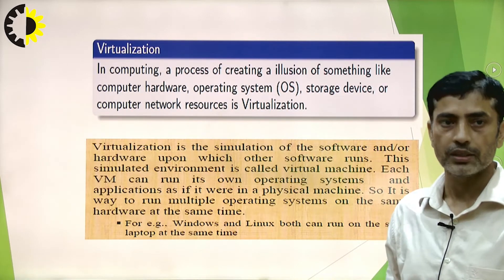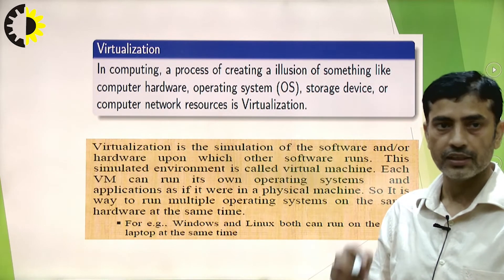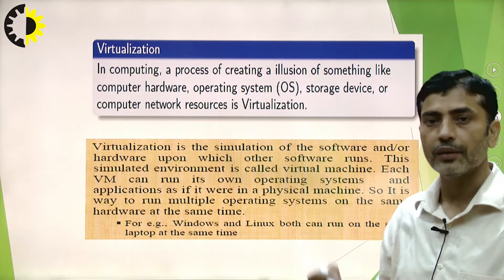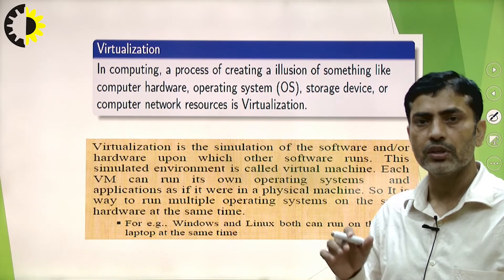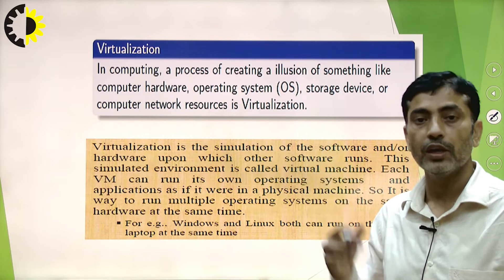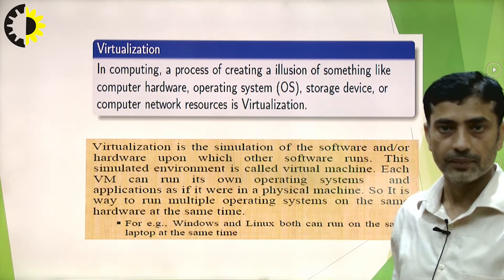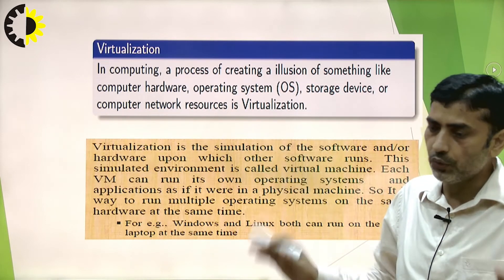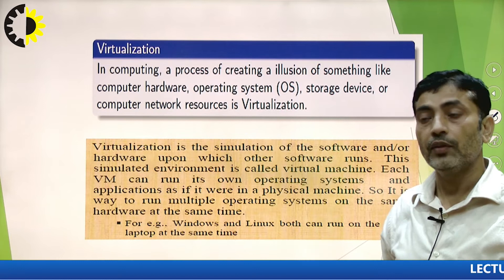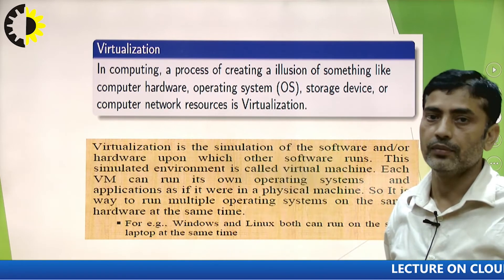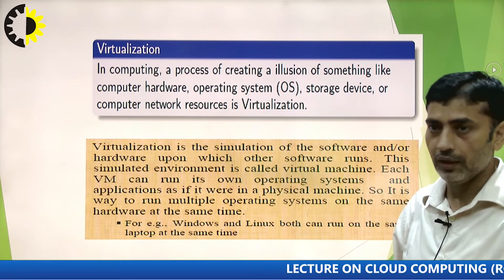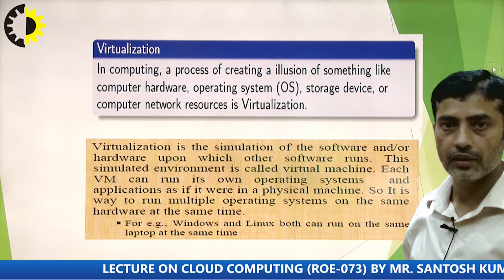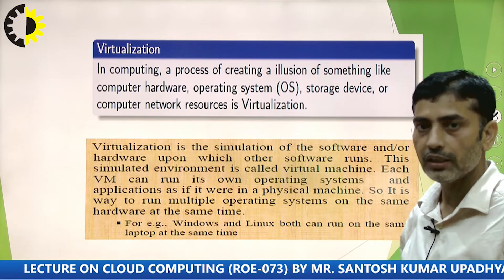Each VM can run its own operating system and applications as if it were a physical machine, so you have an illusion — you cannot differentiate. You have the same environment as when using a physical system. That is the beauty of virtualization: it creates an illusion that each user is using the real hardware system, but actually the hardware is divided into different virtual machines using virtualization software, also known as a virtual machine monitor or hypervisor.